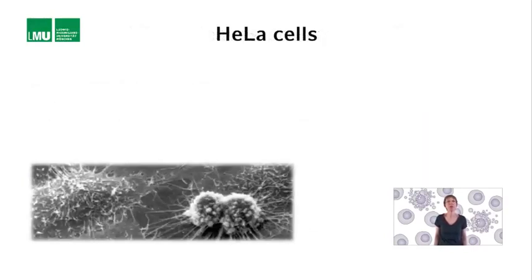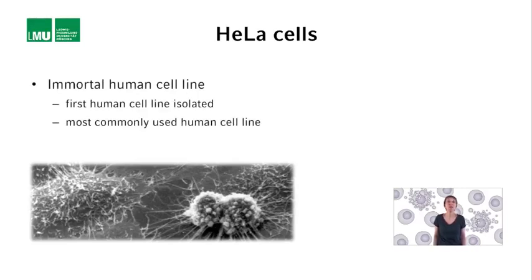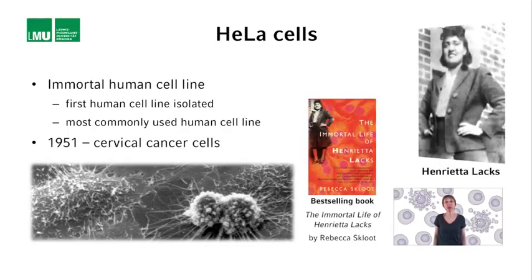To that end, they in vitro transcribed and translated an S35-methionine labeled full-length procaspase-3 and incubated it with cell lysate generated from tissue culture cells — specifically HeLa cells. The HeLa cell line is an immortal human cell line, actually the first human cell line isolated and the most commonly used human cell line even today. It was derived in 1951 from a cervical cancer removed from a patient named Henrietta Lacks, who died of cancer that same year. HeLa cells have been an important tool for numerous biochemical and cell biological studies, not only in cancer research but also in the life sciences.